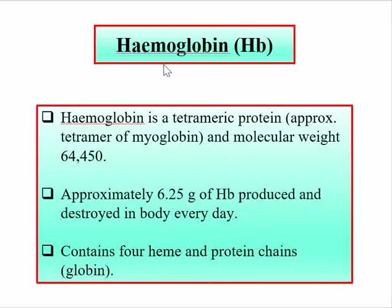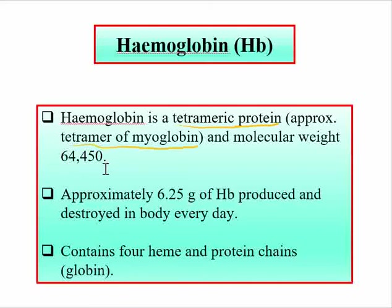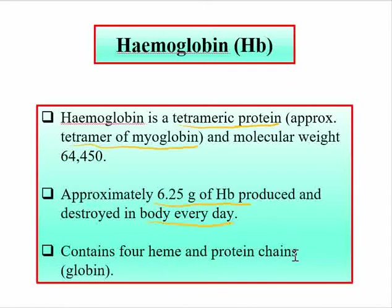In the previous lecture we discussed about myoglobin. If we understand the structure of myoglobin, we can easily understand the structure of hemoglobin. Hemoglobin is a tetrameric protein — it is the approximate tetramer of myoglobin — and its molecular weight is 64,450 Dalton.